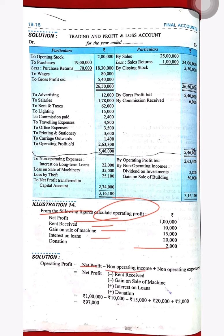The formula is: Operating Profit = Net Profit minus non-operating income plus non-operating expenses. Normally, expenses are subtracted and income is added, but since we have net profit and need operating profit, we reverse the process. So, non-operating income — rent received 10,000 and gain on sale of machine 15,000 — is subtracted, and non-operating expenses — interest on loan 20,000 and donation 2,000 — are added. Therefore, operating profit = 97,000.